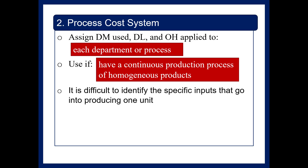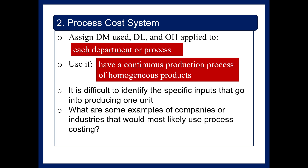In these cases, it is difficult to identify exactly what went into producing one unit. Compare that to manufacturing a house or an aircraft — you know exactly what went into that unit. But if you think about manufacturing cans of soup, you don't really know how many peas go into one can of vegetable soup; you know how many peas go into a batch. Examples of companies using process costing include oil refineries, flour mills, office supplies, and electronics.